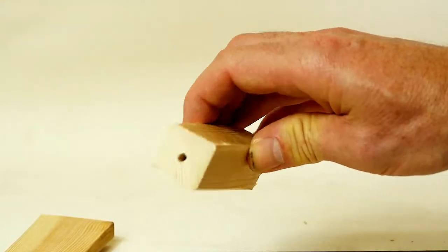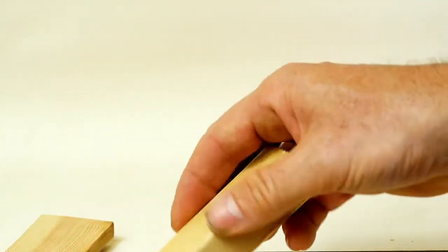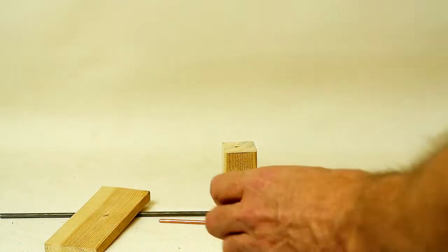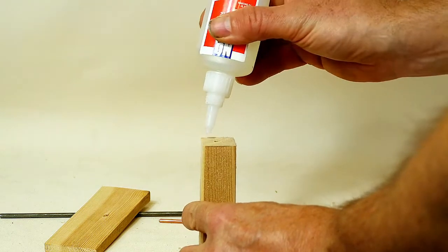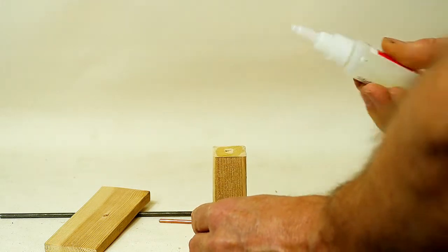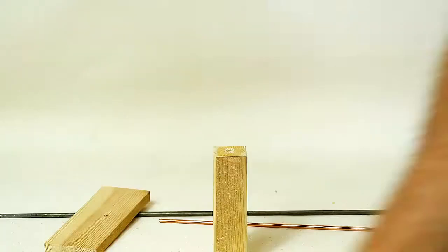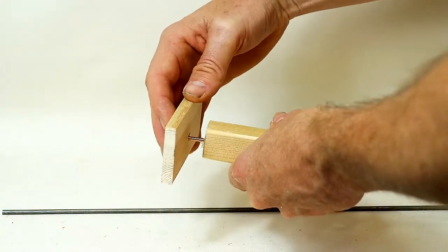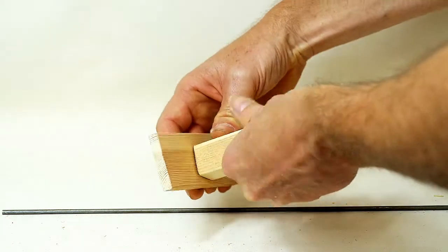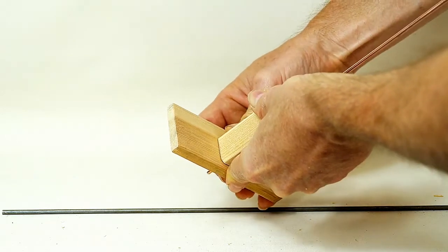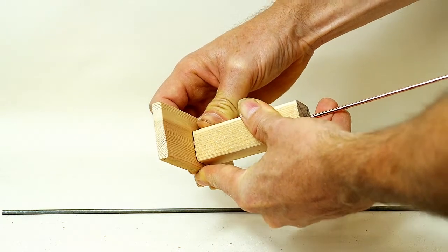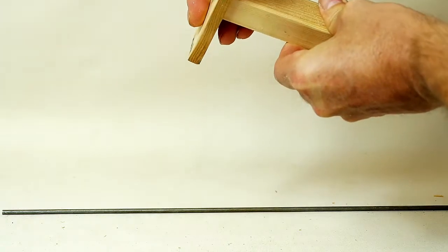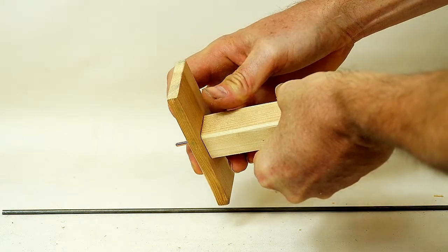So I've just sanded off the corners of the block here, hopefully you can see, and that just makes it a little bit more comfortable in the hand. You haven't got any sharp corners for your fingers or thumbs. So we will glue these pieces together. I've just got some super glue here because it will set a lot quicker. I'm going to pop my rod through, get this piece lined up. Make sure it's on square.